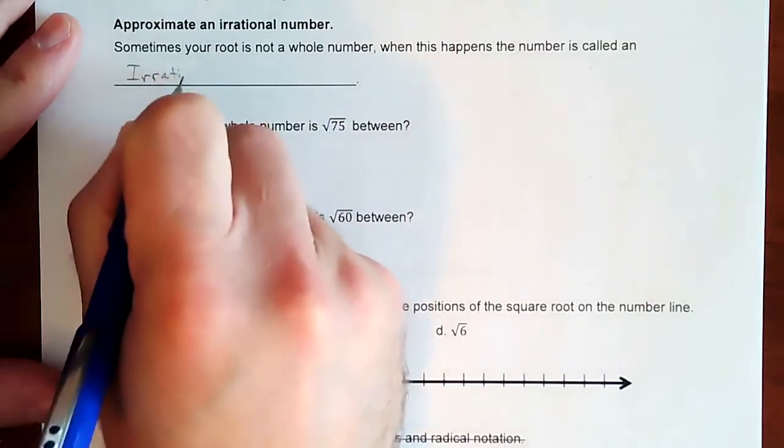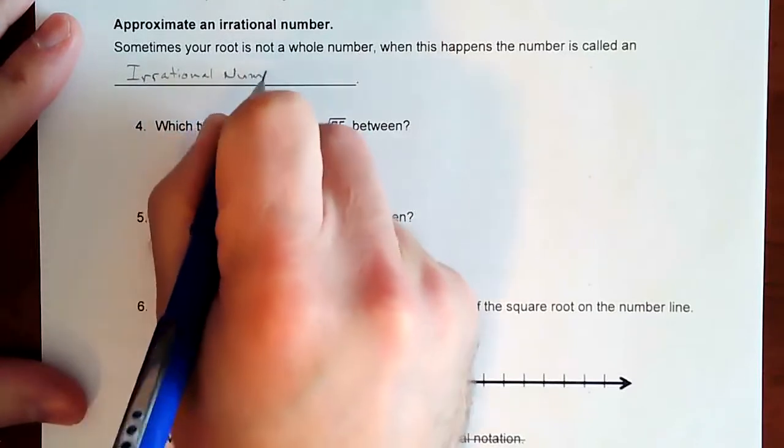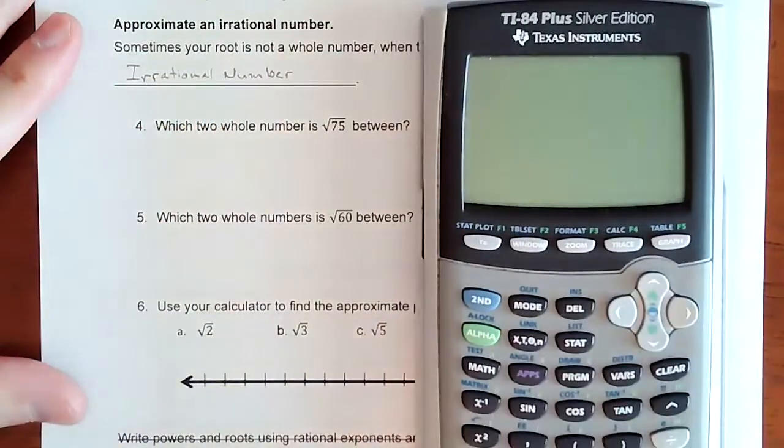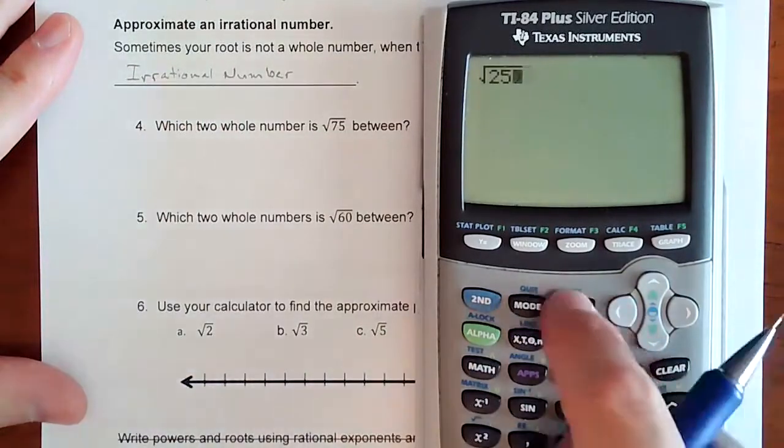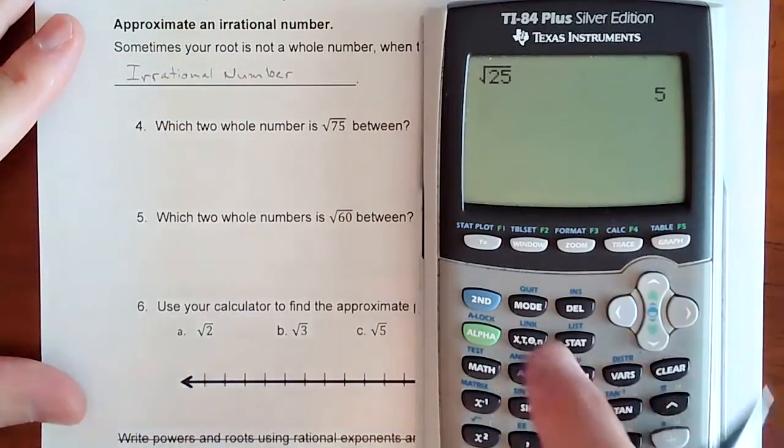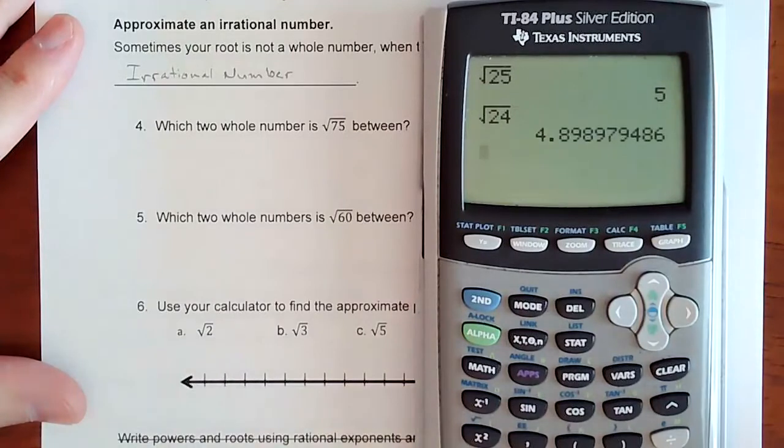So irrational number. It's the difference between trying to square root something like 25, which is a perfect square, so it just turns out to be 5, and square rooting 24, which is not a perfect square.